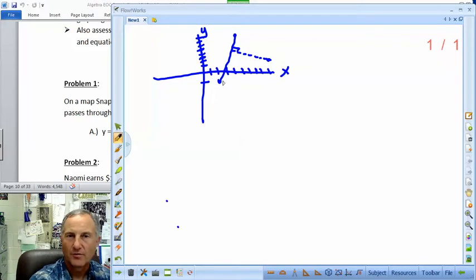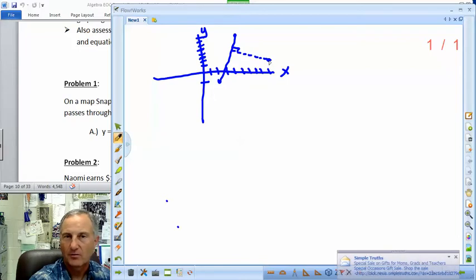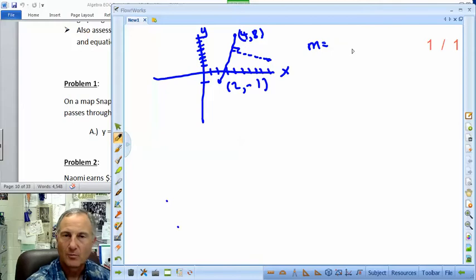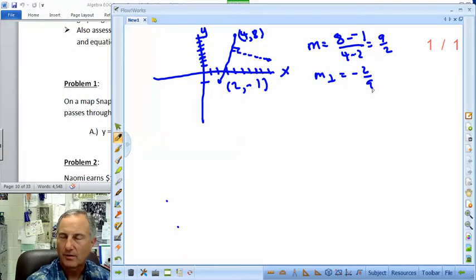So the first thing we're going to do is find the slope of this line, take the negative reciprocal so we can find the slope of this line, and then use that slope and that point to find the equation of that line. So let's start off here with our first equation. We know that this is (2, -1), and this was (4, 8). So the slope of that line will be 8 minus the negative 1 over 4 minus 2, and we're going to get 9 halves as our slope.